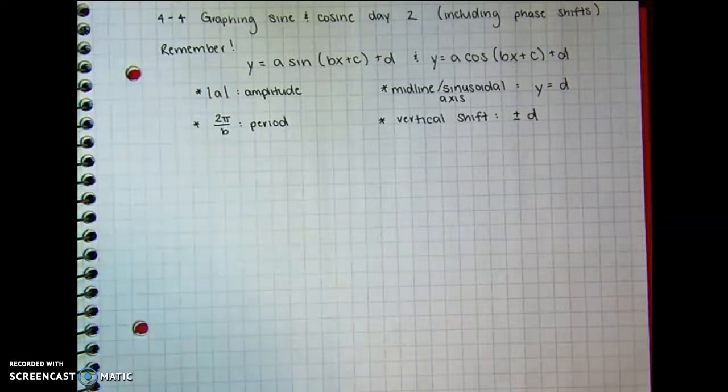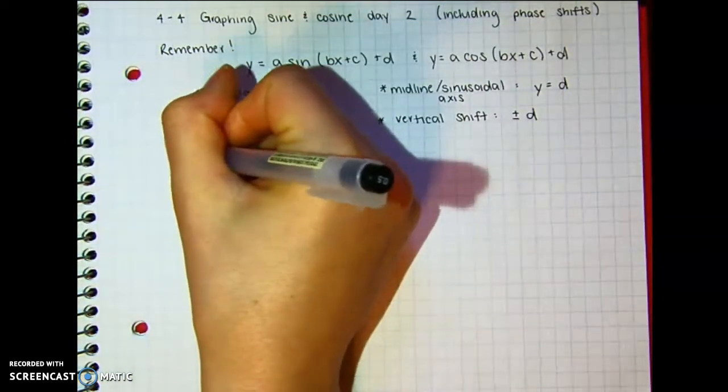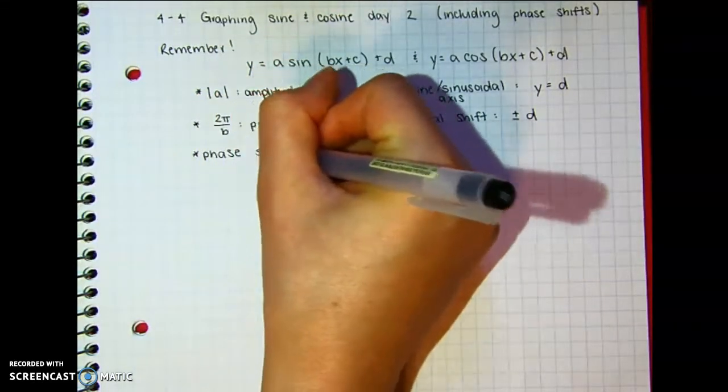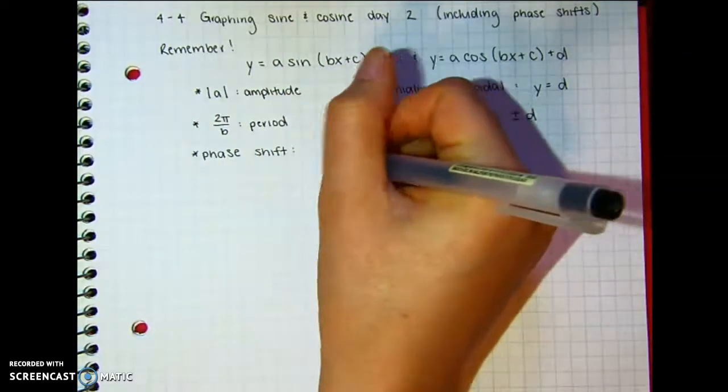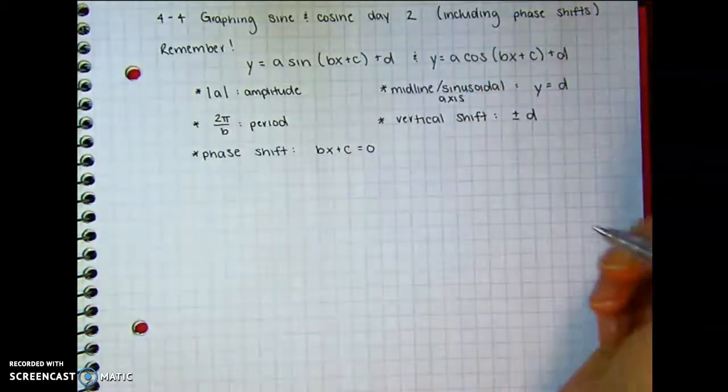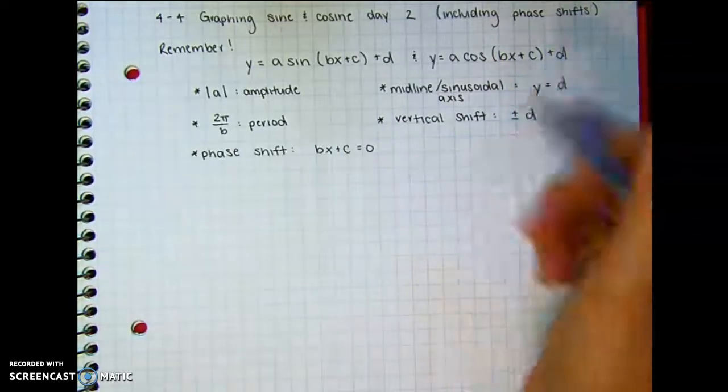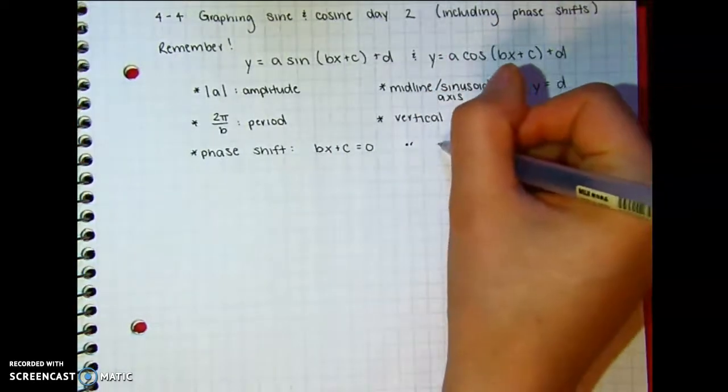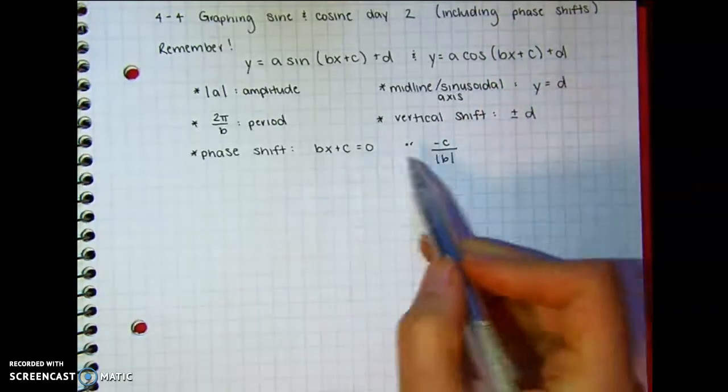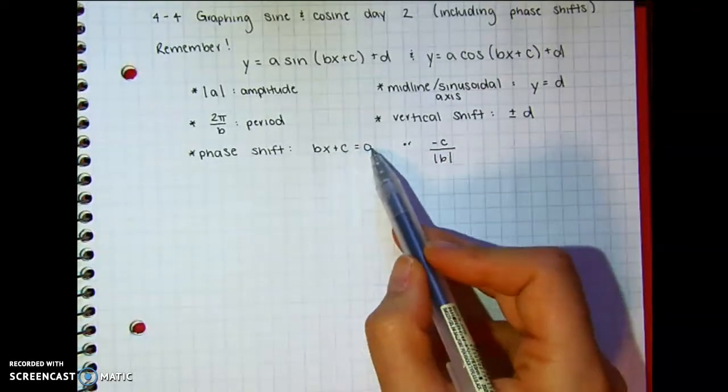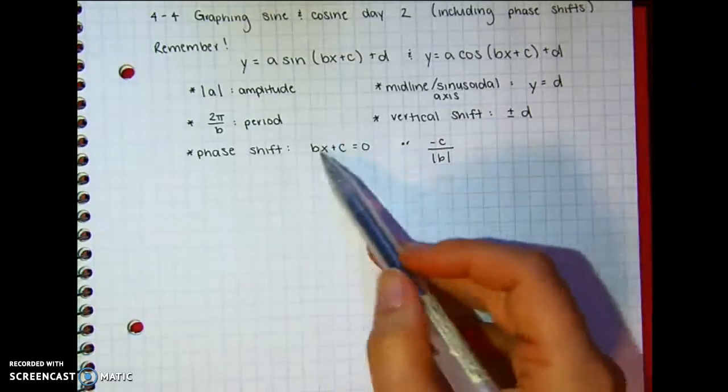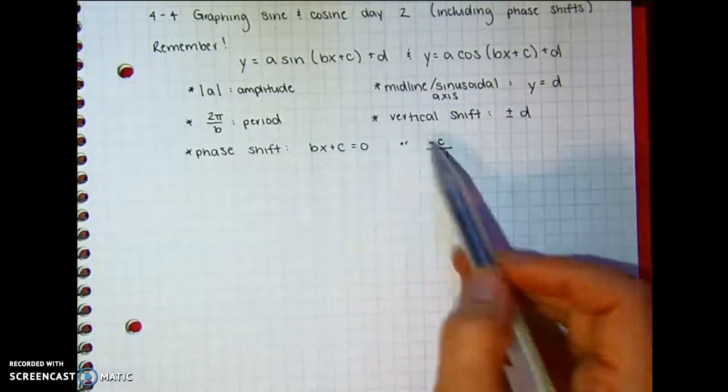The part that's new is a phase shift. So to figure out the phase shift, my preference is to do, you take your Bx plus C and you set it equal to 0, and then you just solve. Or you do negative C divided by the absolute value of B, which, I mean, x would equal that, if we subtract C and then we're going to have to divide by B. So these mean the exact same thing, but this seems more intuitive to me, so usually I just go straight for this.